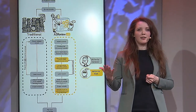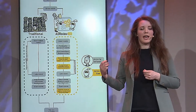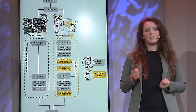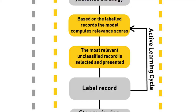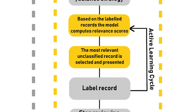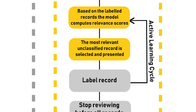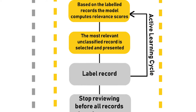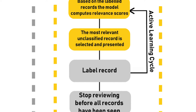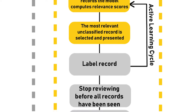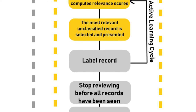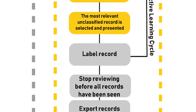You, the user, screen this paper and decide whether it's actually relevant or not — ELAS just presents the paper, and you make the decision. Then ELAS goes to work again, recalculating all the scores based on the prior information and the decision you just made, making ELAS a bit smarter. ELAS then gives you the next paper it thinks has the highest probability of being relevant.